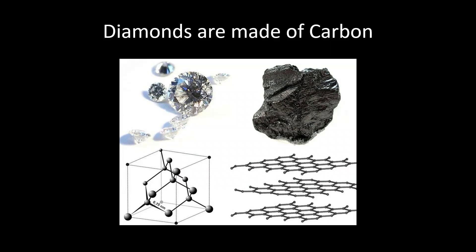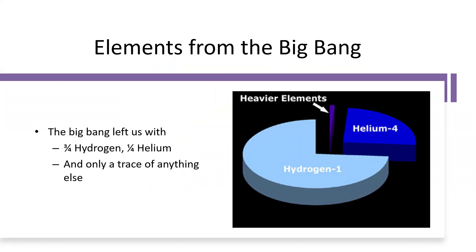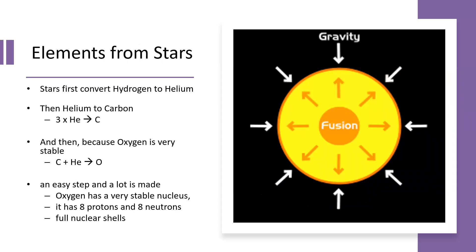To make a planet of diamonds we're going to need a lot of carbon, and we can't get it from the Big Bang, because the Big Bang left us with just three-quarters hydrogen and one-quarter helium, with a trace of anything else — mostly lithium. So it is to stars that we have to turn to get our carbon.